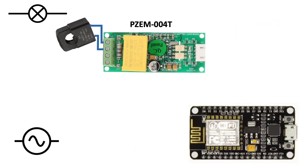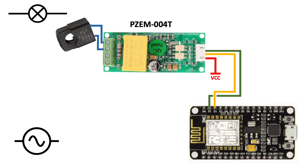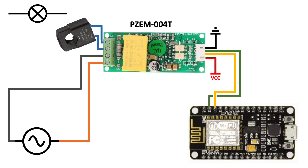Wiring is simple. Connect RX and TX to two GPIOs — we'll use GPIO4 and 5 — VCC to VCC, GND to GND, AC input to AC terminals, and finally clamp the sensor around the hot wire of the load you want to measure.